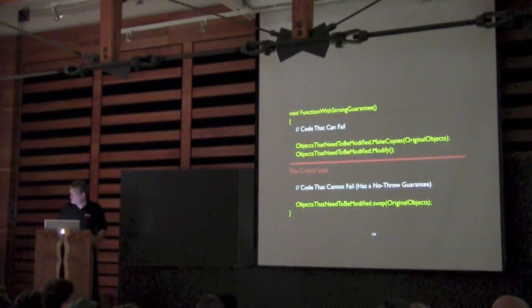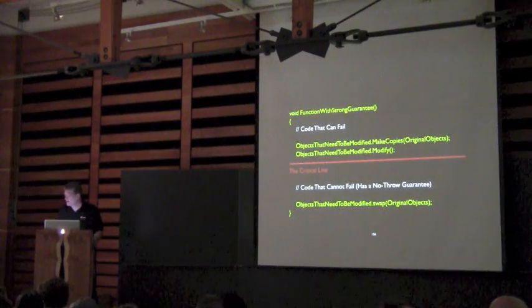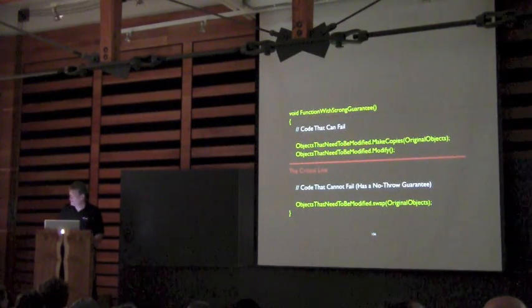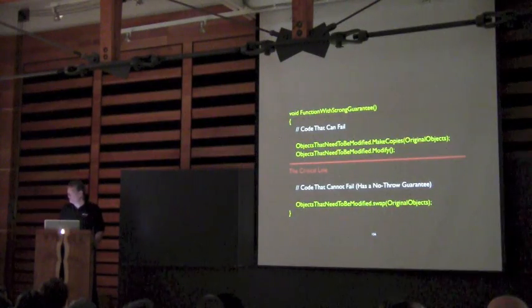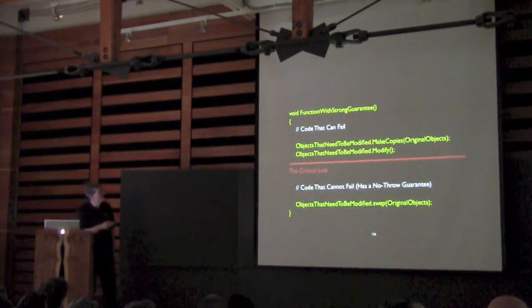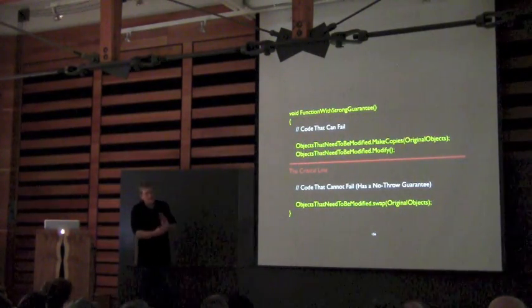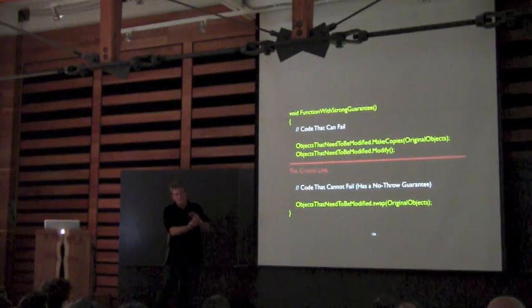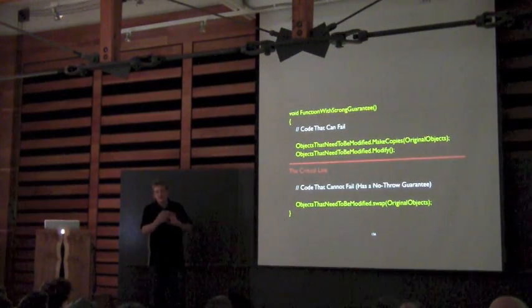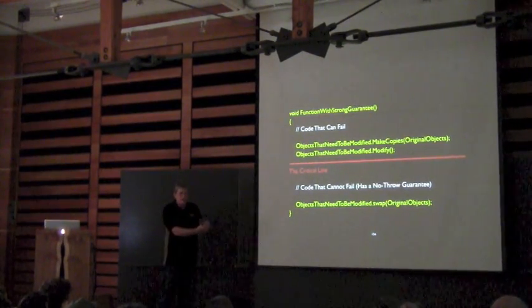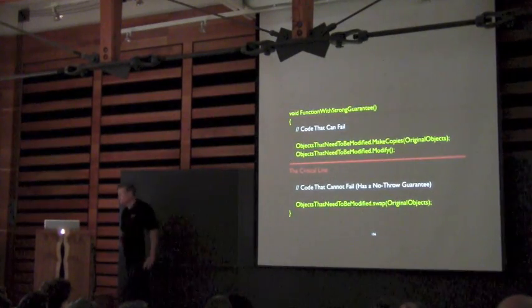Also relating to threading: if you need to lock something, you want the lock window as small as possible. Do as much copying and updating outside the lock, then lock and do whatever needs to be done at the very end. Make the lock window as small as possible. The pattern is the same: do all your preparatory work, then lock down and commit.